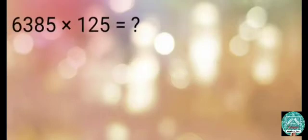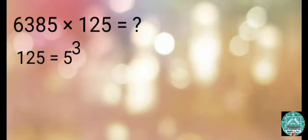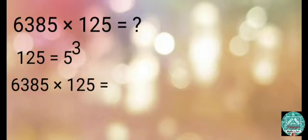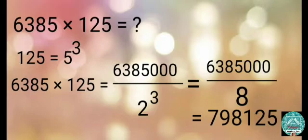Multiply 6,385 by 125. 125 equals 5 raised to the power 3, so put three zeros to the right of 6,385. Then divide this number by 2 raised to the power 3, that is 8. After dividing, we get 798,125.